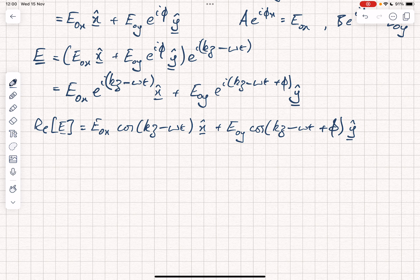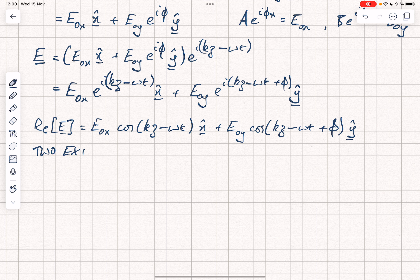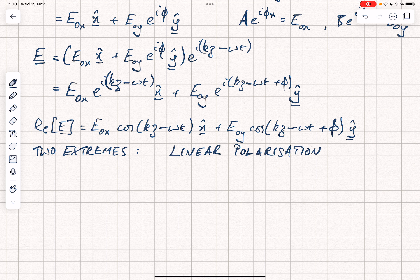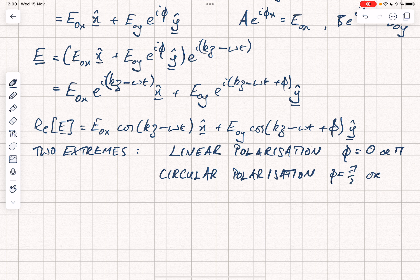So what does it actually mean practically? There are two extremes in terms of polarization. The two extremes are first of all linear polarization, when phi equals 0 or pi. The other extreme is circular polarization when phi equals pi over 2 or 3 pi over 2, and E0x equals E0y.